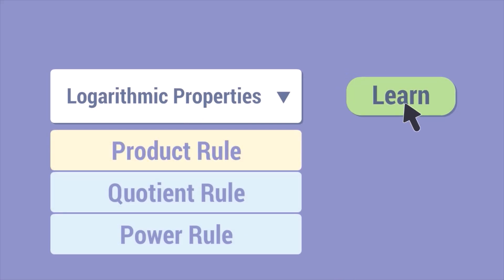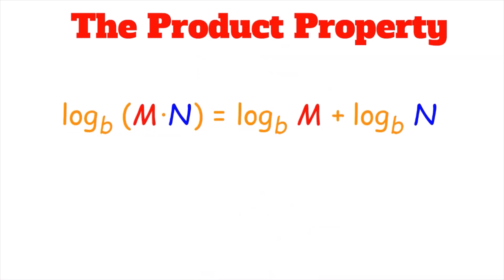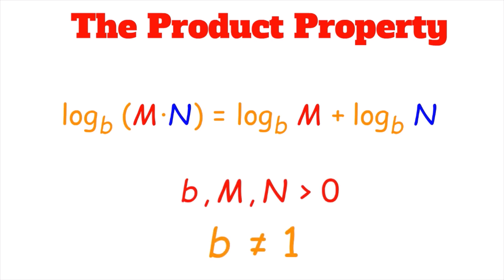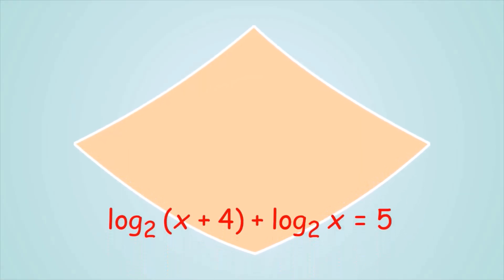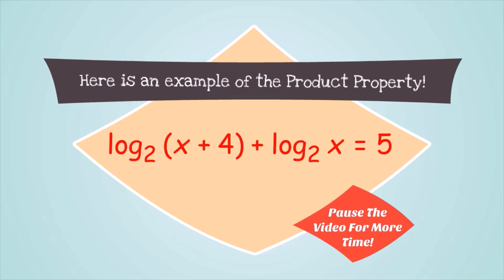The first logarithmic property we will look at is the product rule. The product property states that log base b of m times n is equal to log base b of m plus log base b of n. Here, b, m, and n are all greater than 0, and additionally b is not allowed to equal 1. Here is an example of the product property: log base 2 of x plus 4, plus log base 2 of x, is equal to 5. Can you find the value of x?